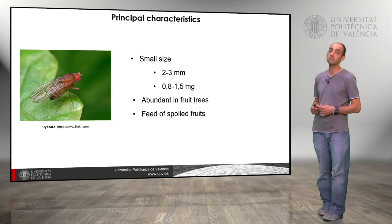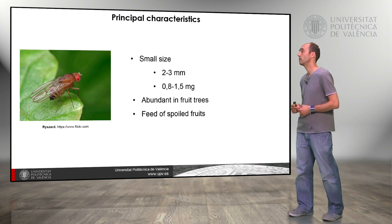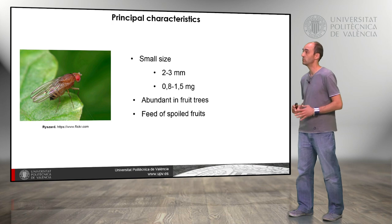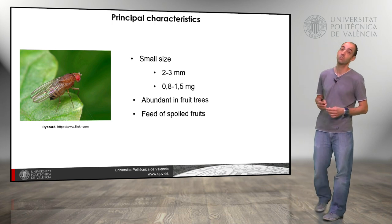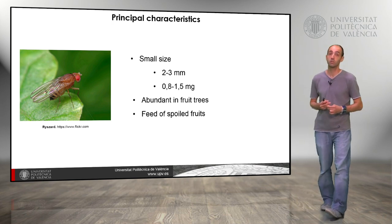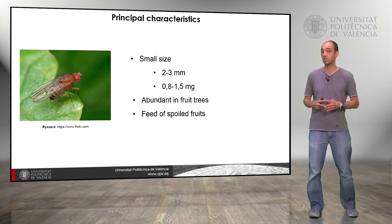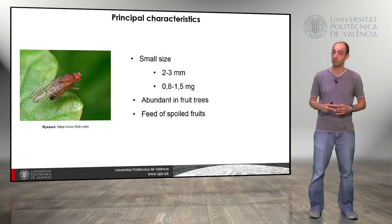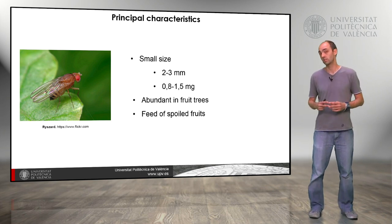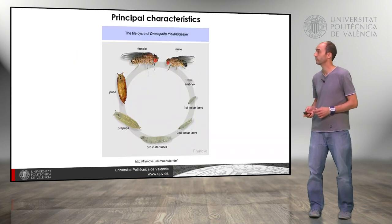It has a small size of 2–3 millimeters and a weight of 0.8–1.8 milligrams, and is abundant in fruit trees. It feeds normally on spoiled fruits — if a fruit spoils, Drosophila will likely appear. It is not considered a pest, but sometimes it can damage some fruits.